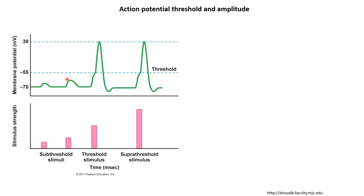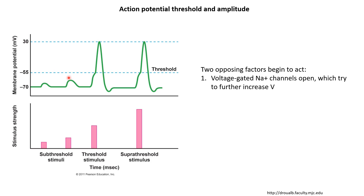This threshold can be explained in terms of the channel properties that we already know. When we give a current stimulus and cause a depolarization, two things start to happen in a neuron. The first thing is that the voltage-gated sodium channels will open as the voltage increases, and when they open, they will bring sodium ions in and make the membrane potential more positive — a factor that will try to further increase the voltage. And there is an opposing factor, the leakage channels, which will try to decrease the voltage, flowing current in the opposite direction so that the membrane potential can come back to baseline.